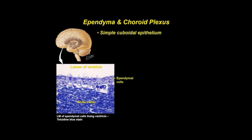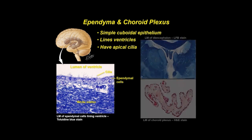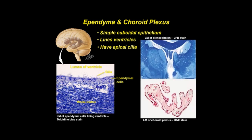Ependyma is a simple cuboidal to columnar epithelium that lines the ventricles and central canal of the spinal cord. This layer of cells is in contact with CSF, which fills the ventricles and cushions the brain. The cells bear apical microvilli and cilia that project into the ventricular lumen. The choroid plexus produces CSF and consists of folds of vascularized pia mater covered by modified ependymal cells specialized for secretion and ion transport.